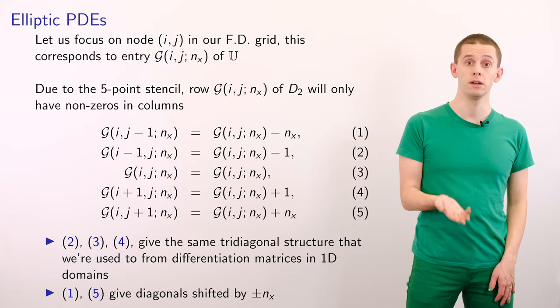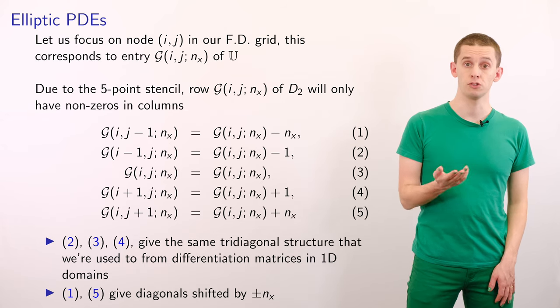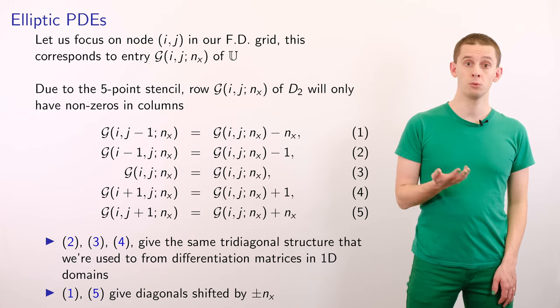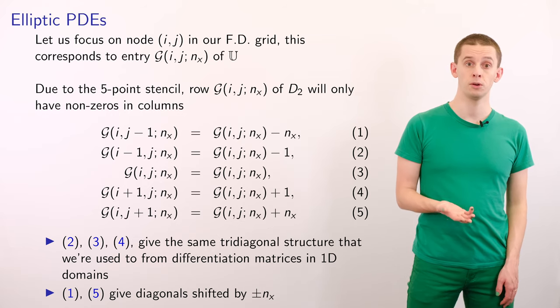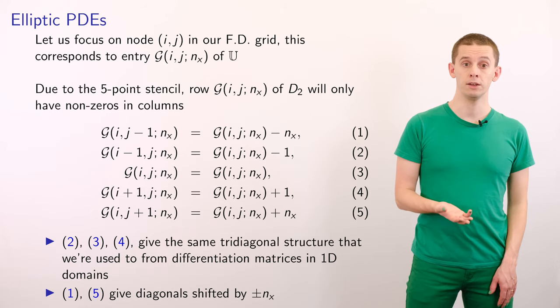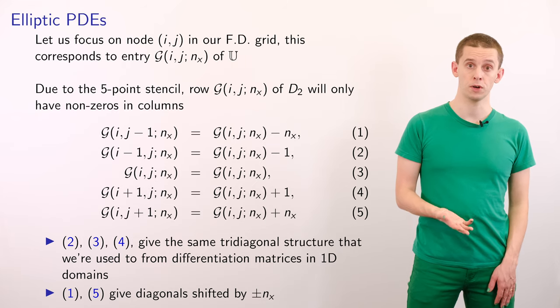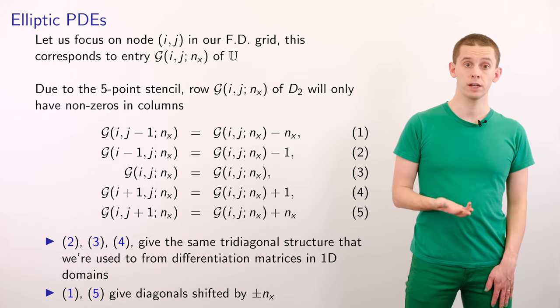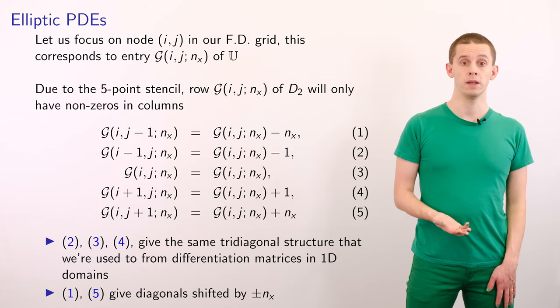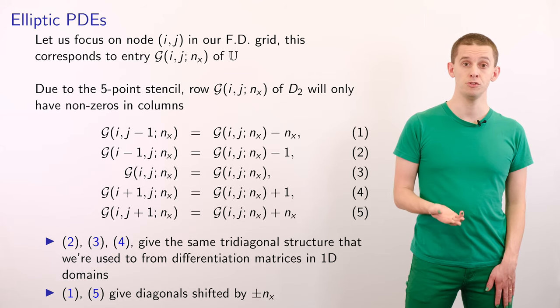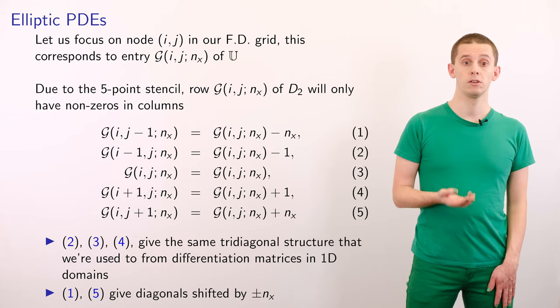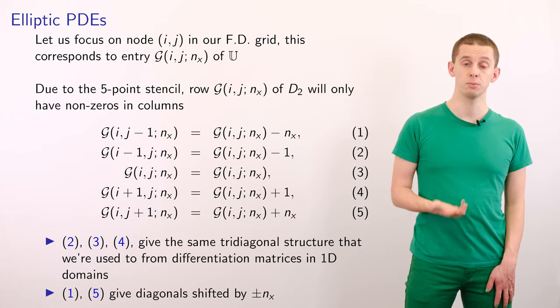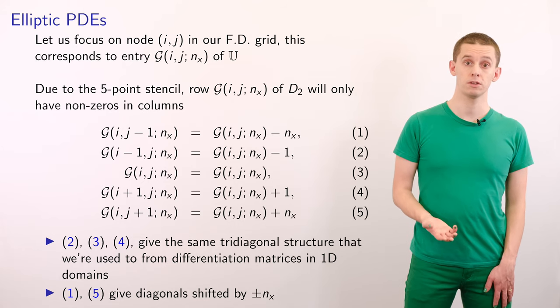Let us now focus on node i comma j in our finite difference grid and that will correspond to the entry script G of i comma j in our vector u. Due to the five point stencil we know that the row corresponding to script G will only have non-zero entries in up to five columns. And we can determine the indexes of those five columns using our script G operator on the points that neighbour i comma j. And if we look at script G of i comma j minus 1 then we'll see that that is script G of i comma j but displaced by minus nx. Similarly if we look at the other neighbours of i comma j we'll see that they correspond to displacements of minus 1, plus 1, and plus nx in our solution vector.